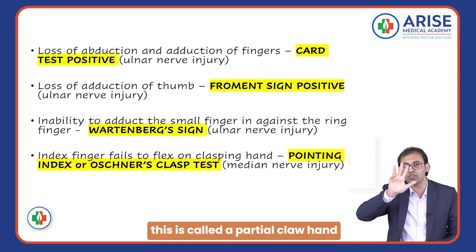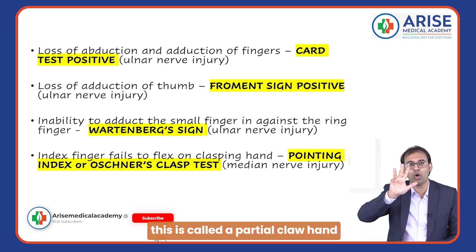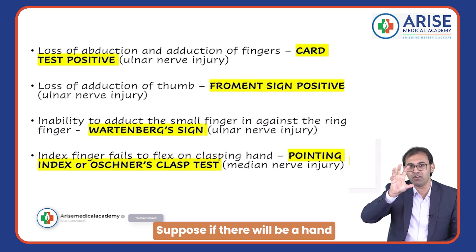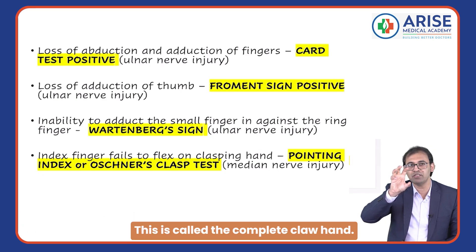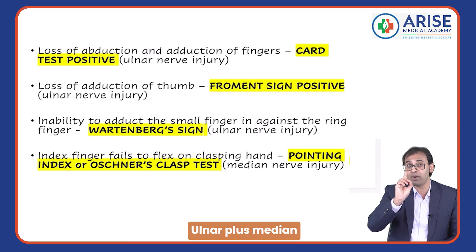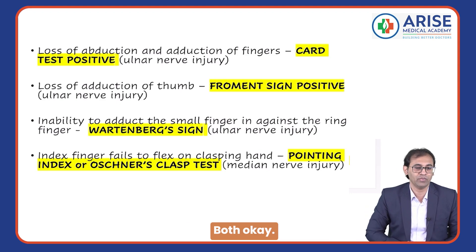If the hand looks like this, it is called a partial claw hand, and this is because of the ulnar nerve. If the hand looks like this, it is called a complete claw hand — this involves both the ulnar nerve and the median nerve.